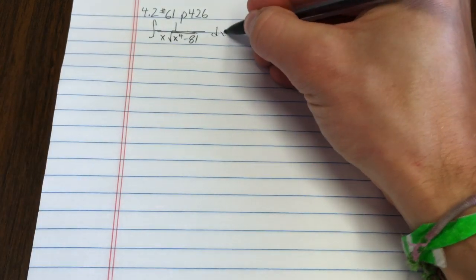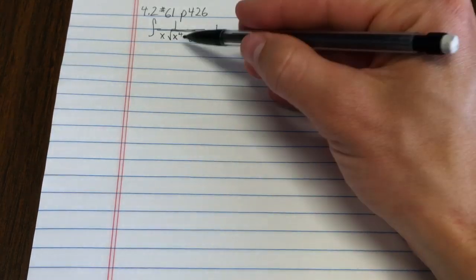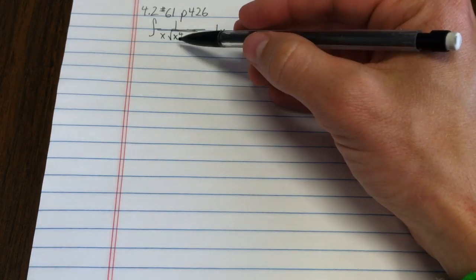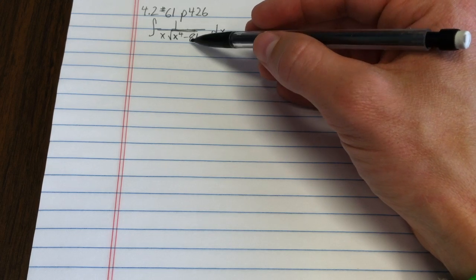You might say to yourself, I'd like to get rid of the thing inside the square root. So you could make your u x to the fourth minus 81, but then your du would be x to the third, and that doesn't really show up.